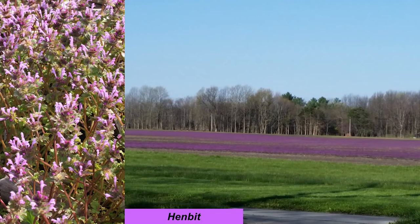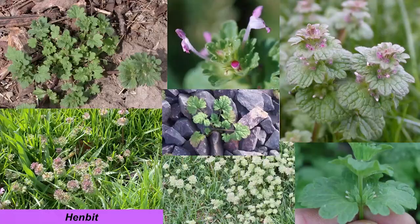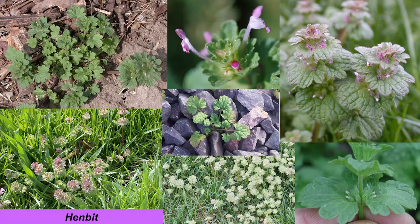Henbit is a cool season annual — it's most noticeable in the spring when in full bloom and covering the fields. Flowering can sometimes occur in the fall too. Henbit prefers fertile, moist soils. It is a mint with square stems, low-growing, but the stems are usually upright. The leaves are prominently veined and crinkled, arranged two different ways on the stem. The lower leaves have a rounded toothed margin and are attached to the stem with a petiole. The upper leaves are deeply lobed and born directly on the stem with no petiole. The flowers are pink to purple, tubular-shaped, appearing to have two lips, and are born in whorls in the upper leaf axils.